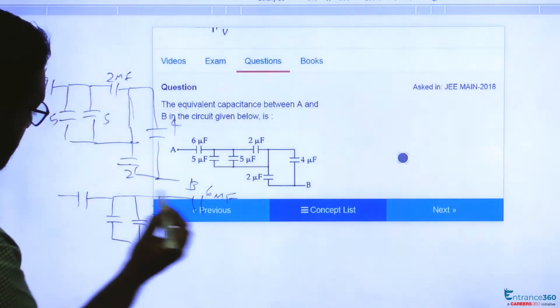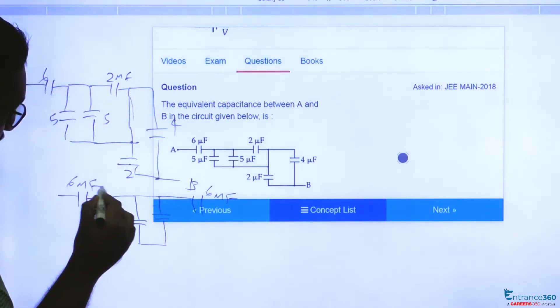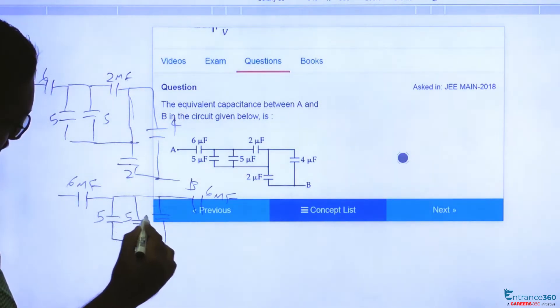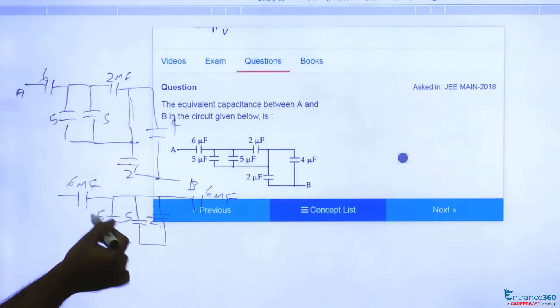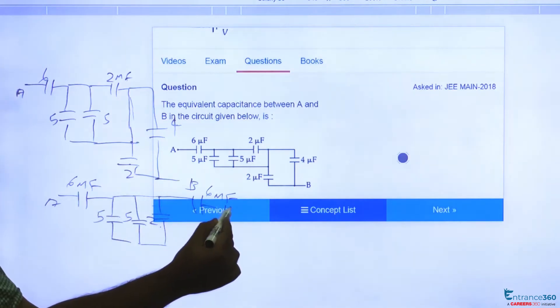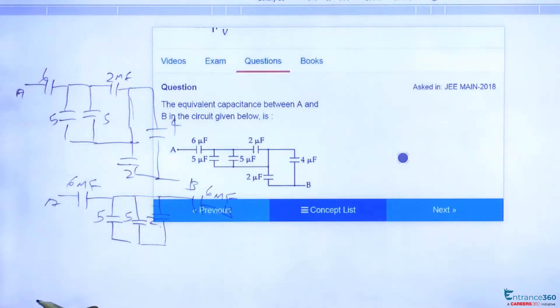2 plus 4 equals 6 microfarad. 6 microfarad, 5, 5, and 2. This 5, 5, and 2 are in parallel, so net capacitance will be 5 plus 5 plus 2, which is 12. Now we have 6.